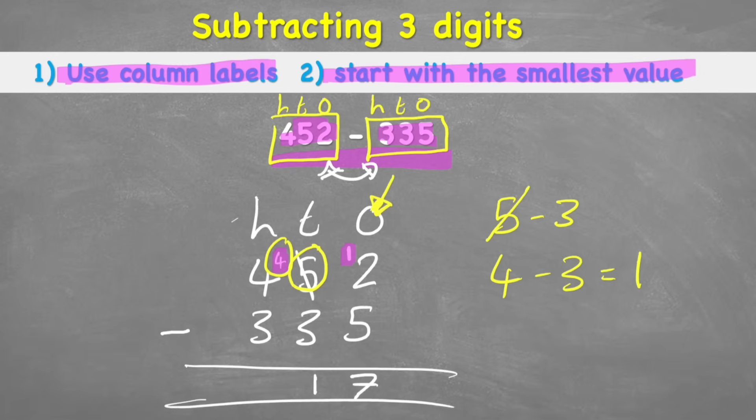And then I didn't do anything to my 100s, so I still have the 4 subtract 3, which is here. And 4 subtract 3 equals 1. So my total answer to 452 subtract 335 is 117. Let's put the answer at the end of my number sentence and give myself a big tick. Awesome.